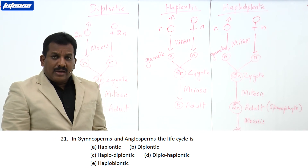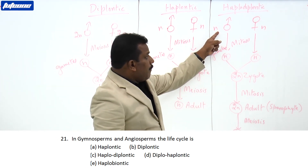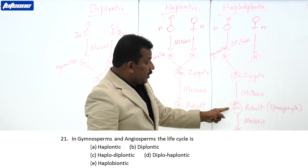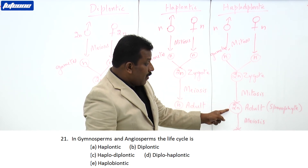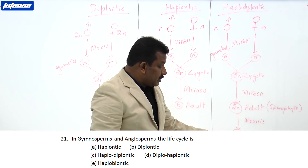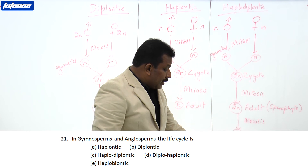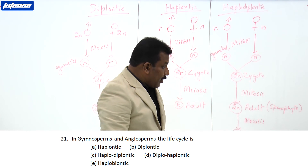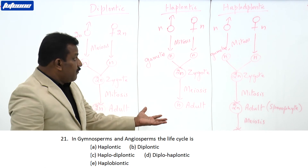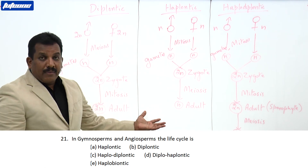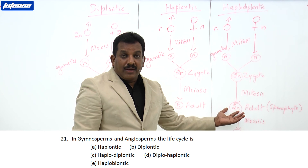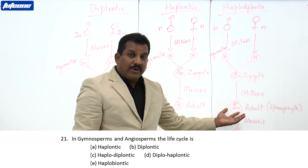Haplodiplondic is a type where haploid parents produce a diploid zygote. The zygote develops into a diploid stage — a sporophyte — which produces spores after meiosis, from which a new adult comes. This shows alternation of generations. This is mainly found in algae. Haplodiplondic life cycles are mainly found in bryophytes and pteridophytes.